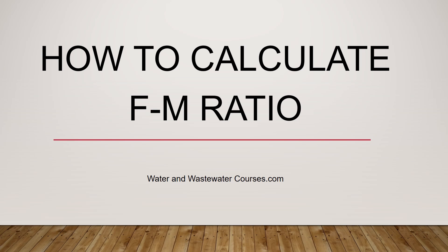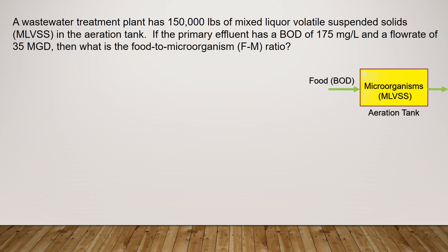Let's go through a sample problem so that you know what I mean by that. A wastewater treatment plant has 150,000 pounds of mixed liquor volatile suspended solids in the aeration tank. If the primary effluent has a BOD of 175 mg per liter and a flow rate of 35 MGD, then what is the food to microorganism FM ratio?